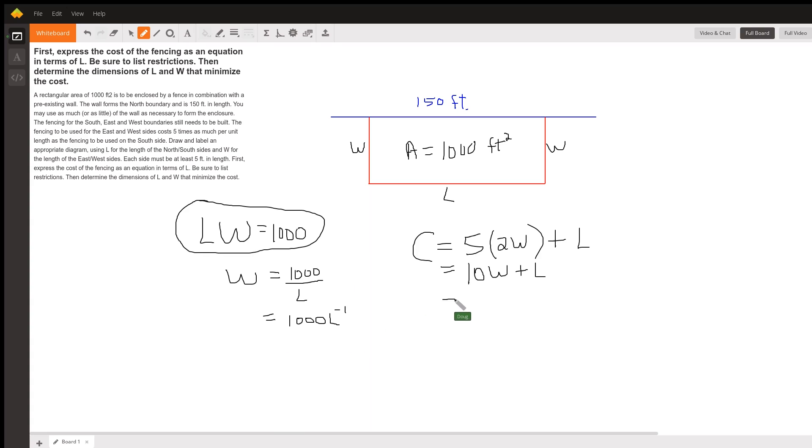So I can rewrite the cost function in terms of L: 10 times 1,000 L to the minus one plus L.